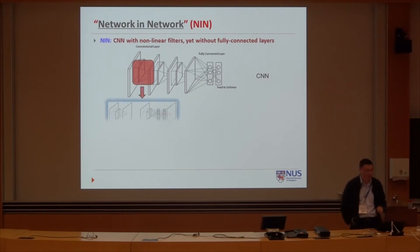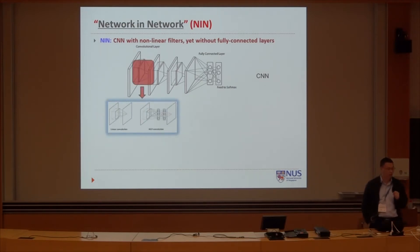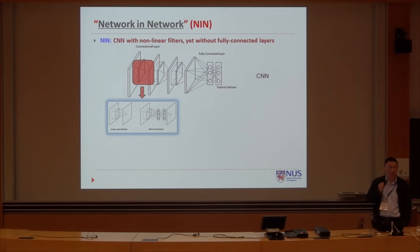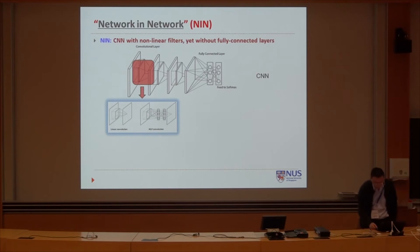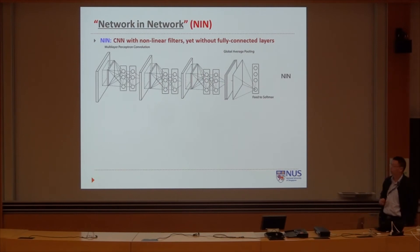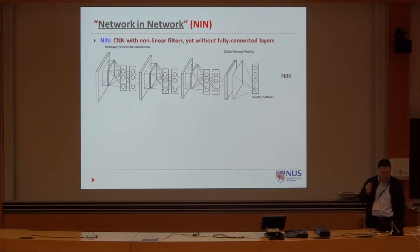Intuitively, we can extend the linear convolution to a small network having more complex data. At the same time, because of the fully connected layer, the semantic meaning of the last convolution layer is not clear anymore. So we remove this fully connected layer. Finally, we have this Network in Network — the filter is stronger and the fully connected layer is replaced by the global average pooling layer.